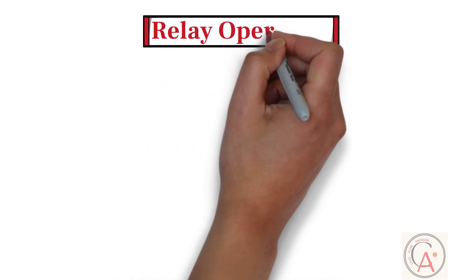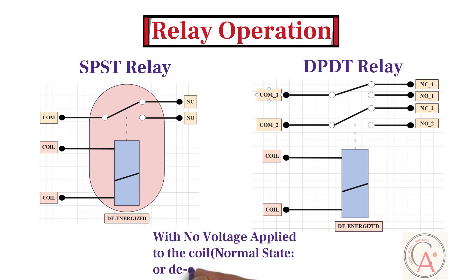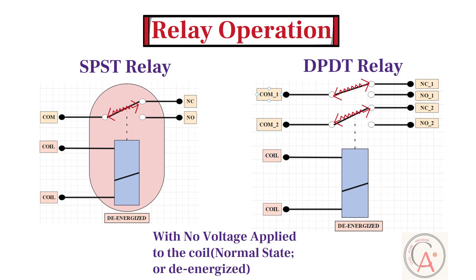In this section, I am going to explain the relay operation of a single-pole single-throw relay and a double-pole double-throw relay. First, let's start with the de-energized state of the relay. As we already know, in a relay, the common contact is attached to the armature and it moves between the output contacts when the armature moves. In the de-energized state, with no voltage applied to the coil, there is continuity between the common and normally closed contacts, and there is no continuity between the common and normally open contacts. This state of the relay is known as the normal state or de-energized state.